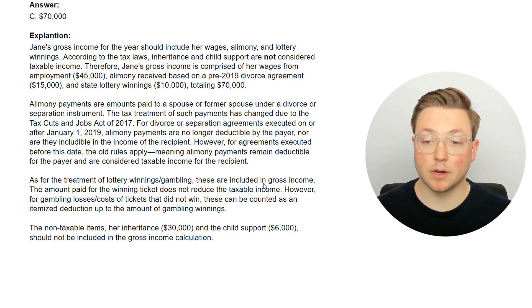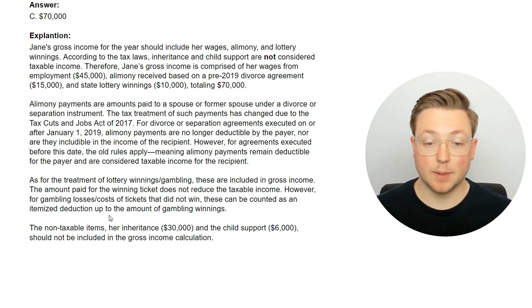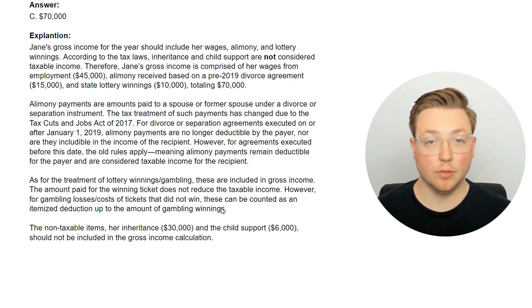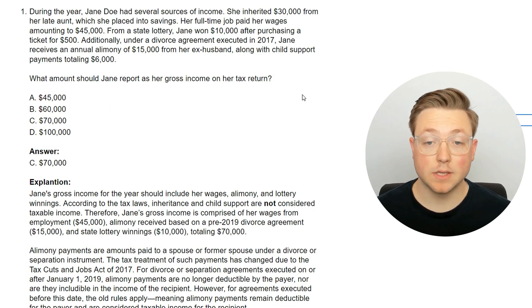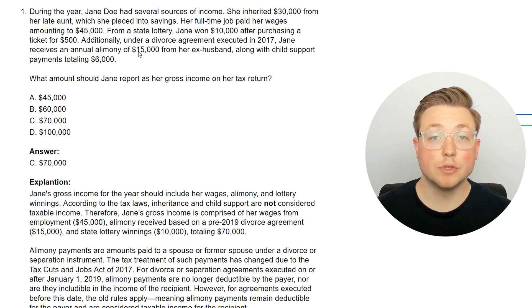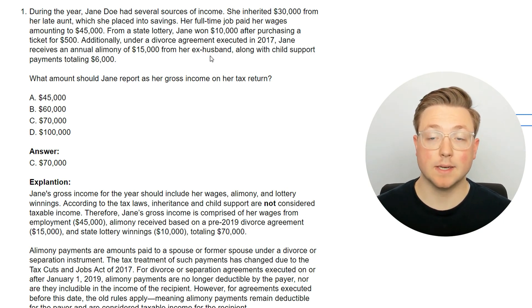As for the treatment of lottery winnings and gambling, these are included in gross income. The amount paid for the winning ticket does not reduce the taxable income. However, for gambling losses or costs of tickets that did not win, these can be counted as an itemized deduction up to the amount of gambling winnings. The non-taxable items — inheritance and child support — obviously aren't included in gross income. Since this divorce was before 2019, the alimony is taxable, and child support is never taxable — that did not change from the TCJA.